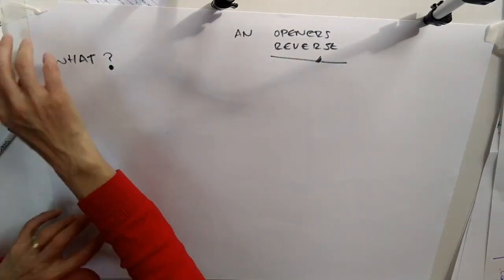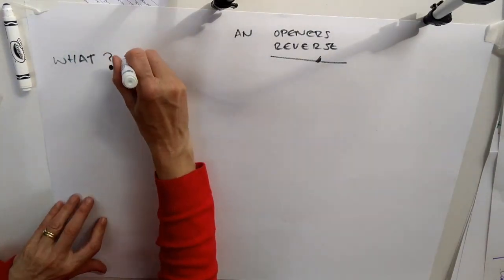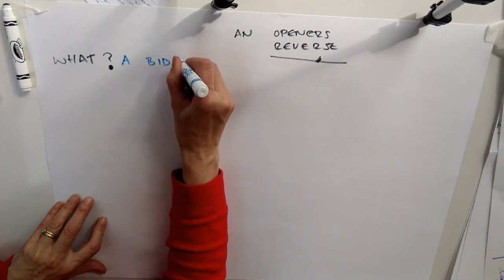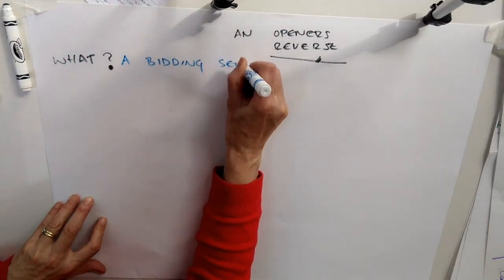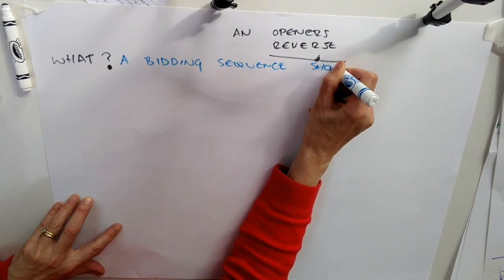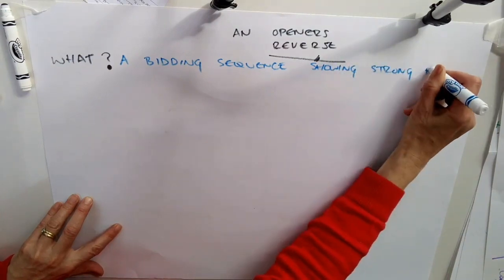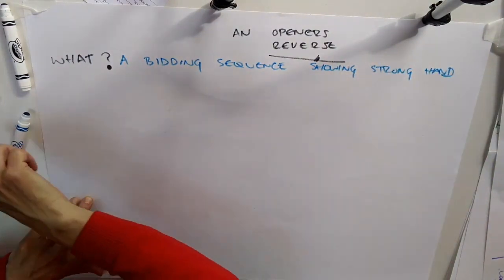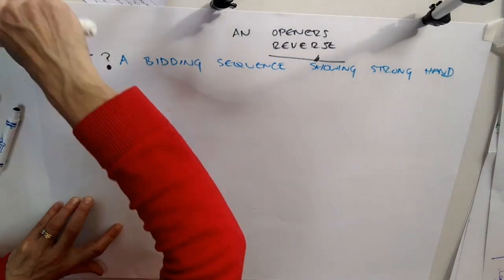It's basically a bidding sequence, one which shows a strong hand. By strong hand, I mean about 16 or more points.